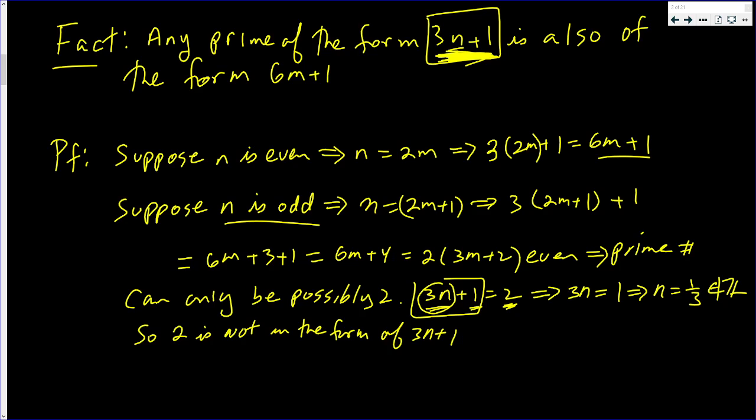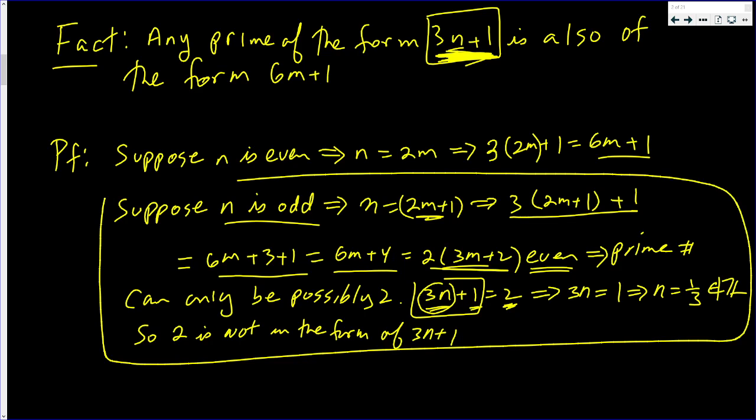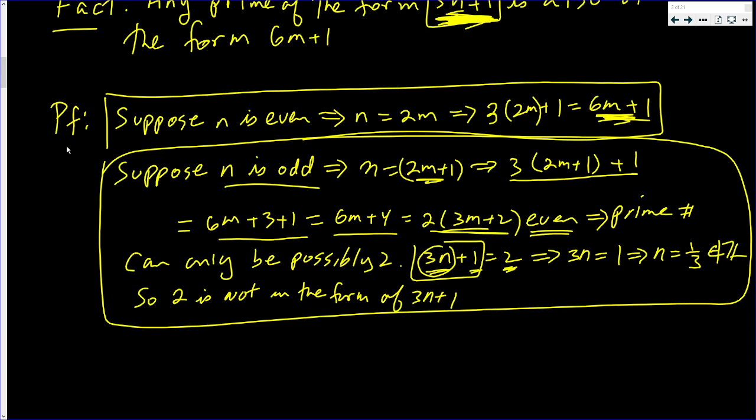Because anytime n is odd, we end up with an even number. The only even prime number is 2, but 2 doesn't work. So when n is odd, there are no prime numbers. And when n is even, prime or not, you can write the number in the form 6m plus 1.